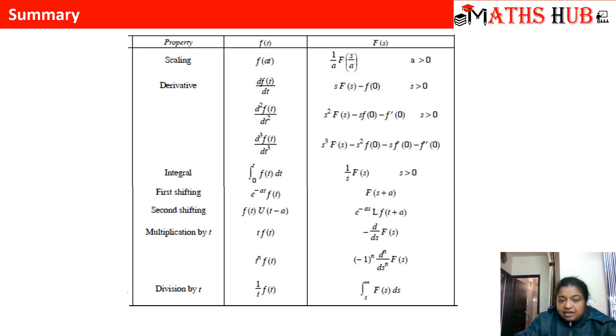Then derivative formula says that the first derivative d of ft by dt, Laplace transform will be s times fs minus f at 0. Likewise, the second derivative formula is s square Laplace of f minus s f at 0 minus f dash 0. And similarly, you can carry on with this derivative formula.